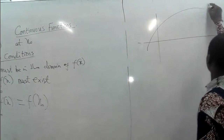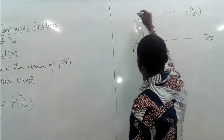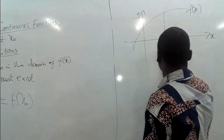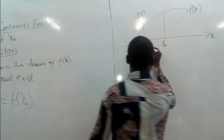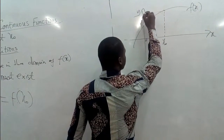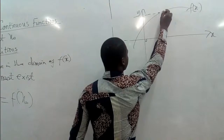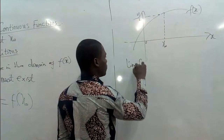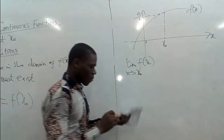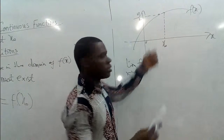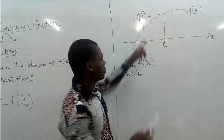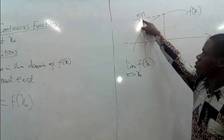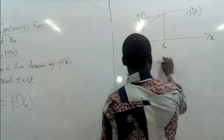Let's take this function to be F of x. We have x on the horizontal axis and y on the vertical axis. We have a certain value we want to call x naught, and it has its corresponding y value. The limit of F of x as x gets closer to x naught — when we move from the left side, we realize that the function values are getting towards F. As we move to x naught from the right, the function value is also getting closer to F. And from the left, we are also getting towards F.